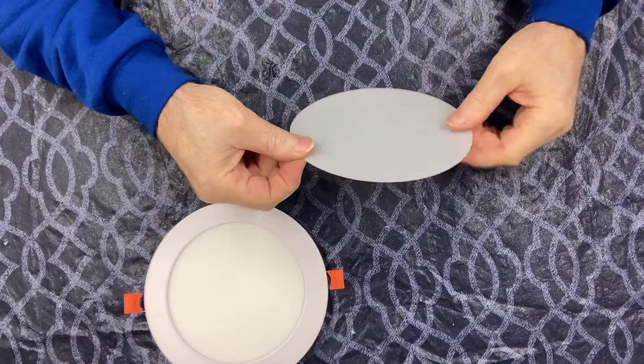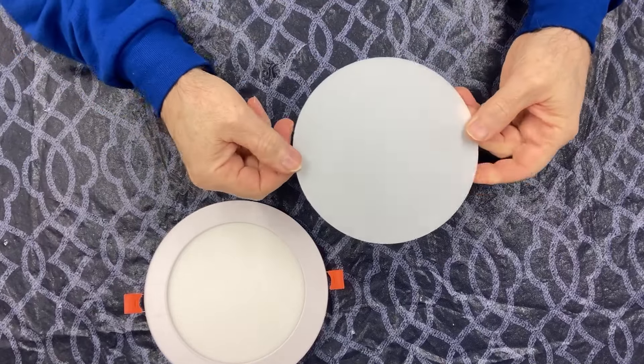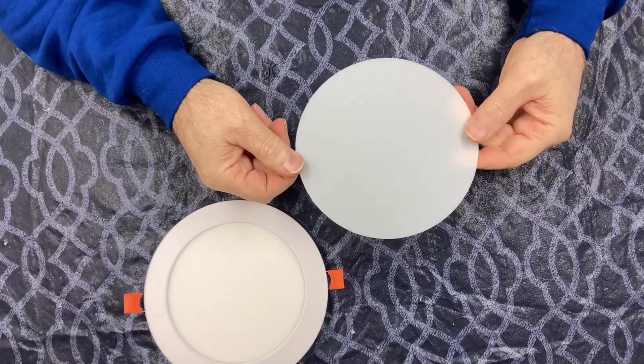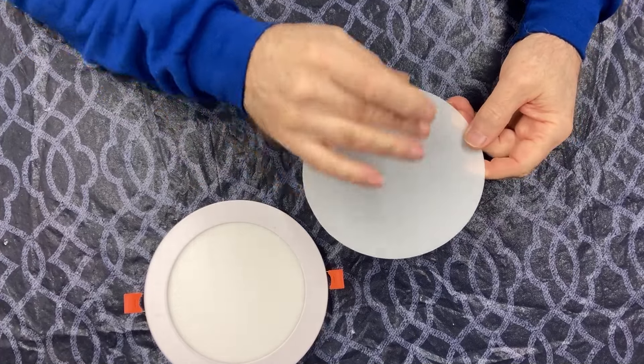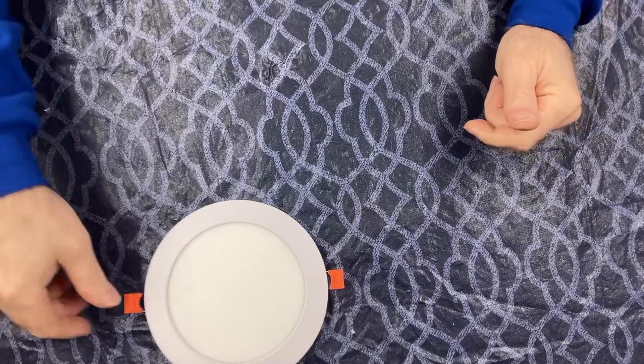You'll be able to get a really nice circle if you want to cut it by hand. Otherwise, you can just get a hole saw and you can cut it that way.